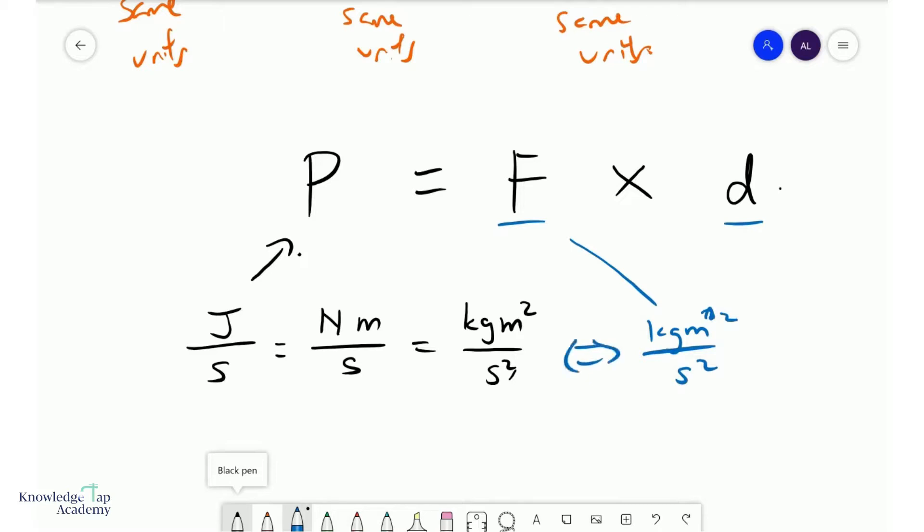Check these two. Clearly, they're not the same because you have an s cubed here and an s squared here. And so this equation is not homogeneous. And this is how you use SI base units to check if a given equation is homogeneous or not.